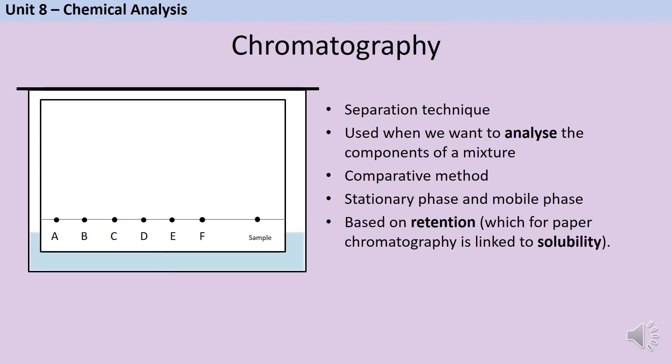All types of chromatography have two phases. The first phase is called the stationary phase, in other words it's the part that doesn't move. So in paper chromatography this is your piece of chromatography paper.